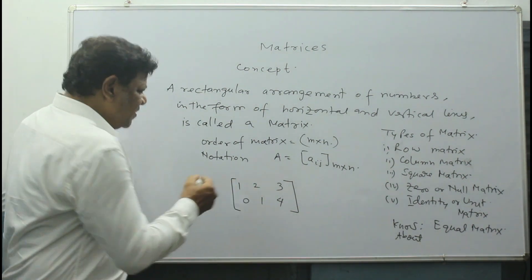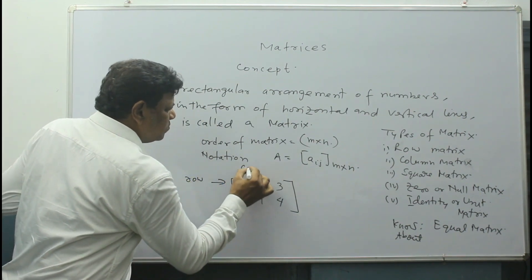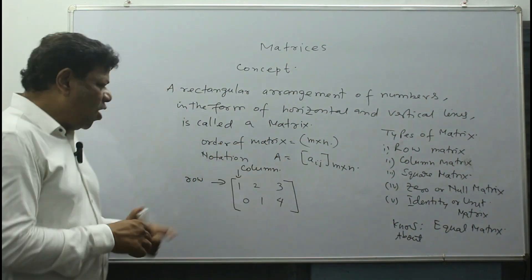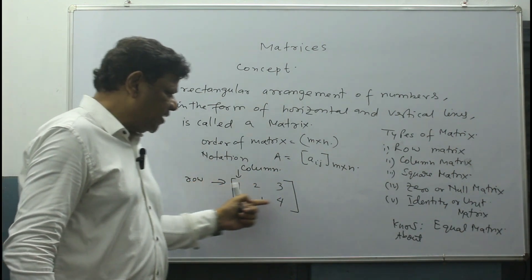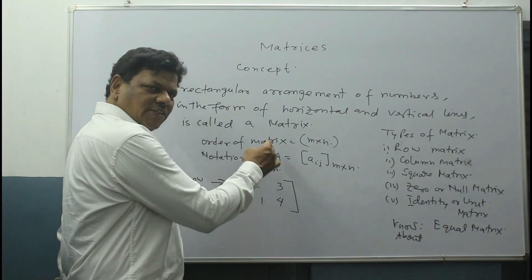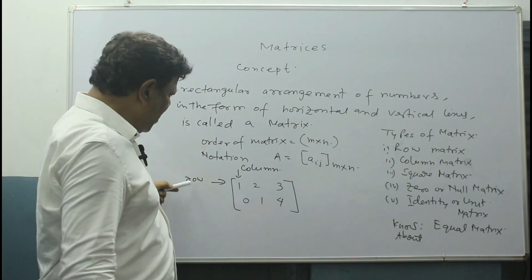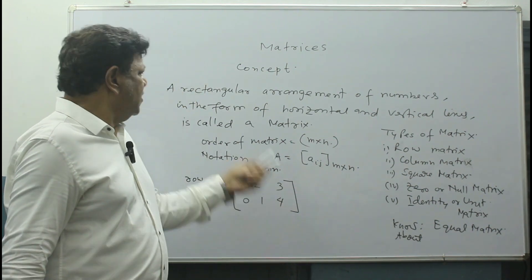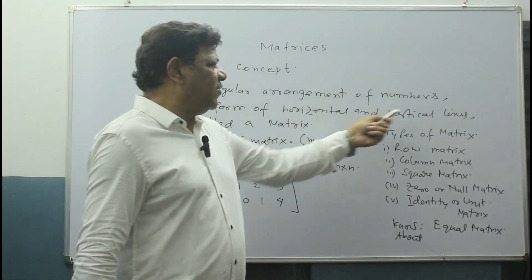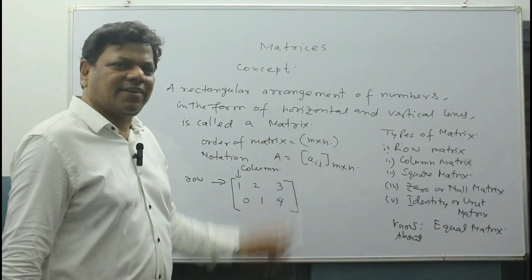This is the matrix. This is called a row and this is called a column. How many rows? This is the first row, this is the second row. How many columns? First column, second column, and third column. So this is row and this is column. This is horizontal and this is vertical. Rectangular arrangement of numbers in the form of horizontal and vertical lines—that is called a matrix.